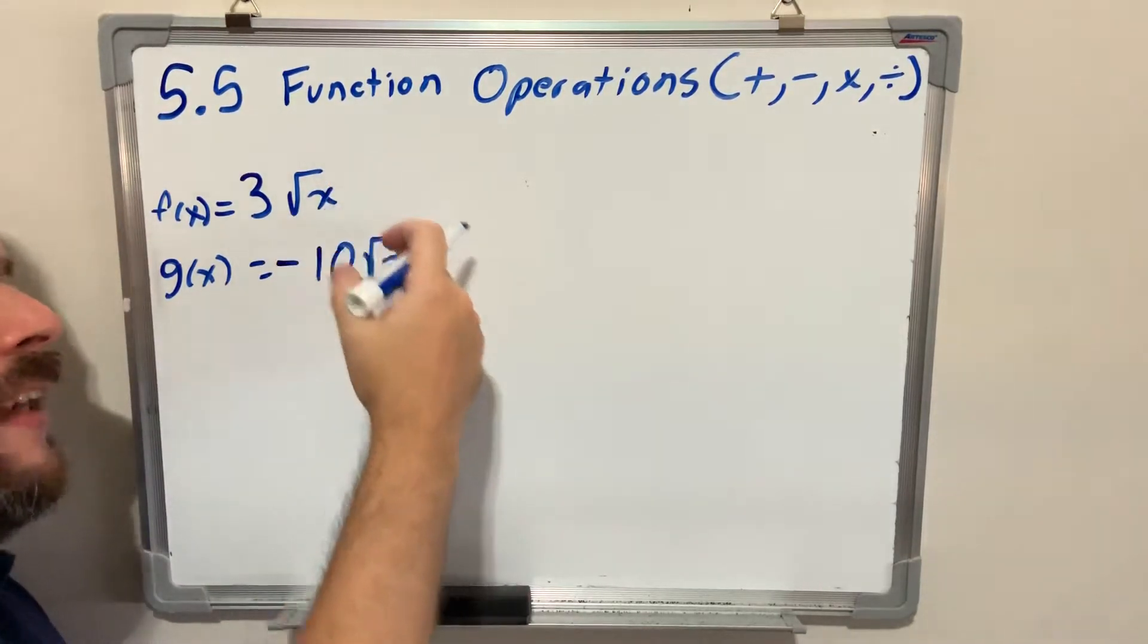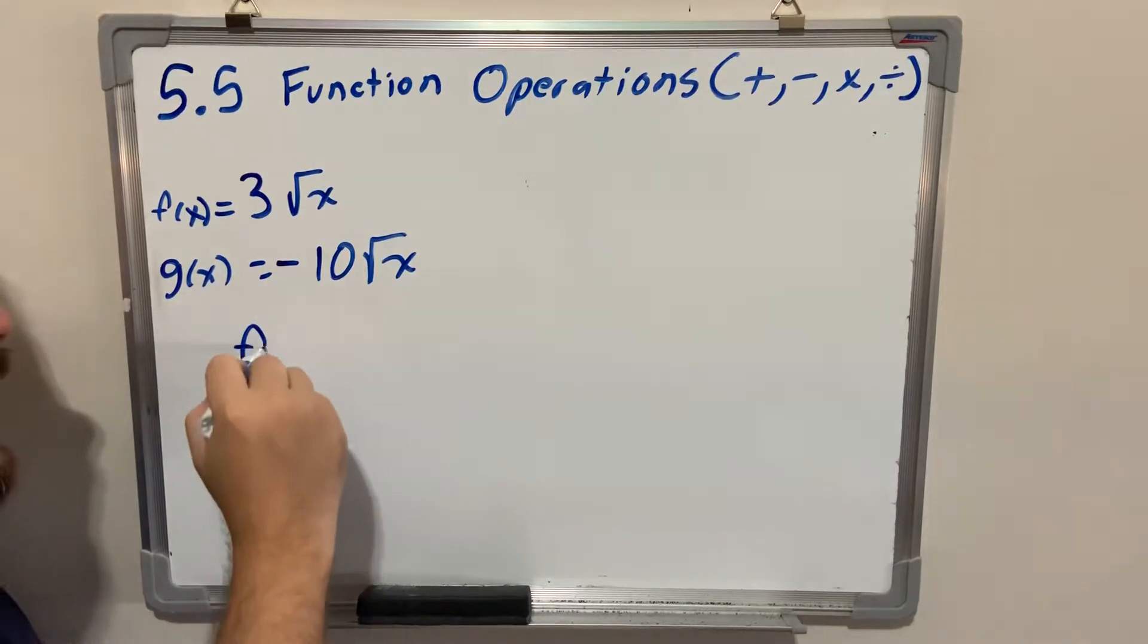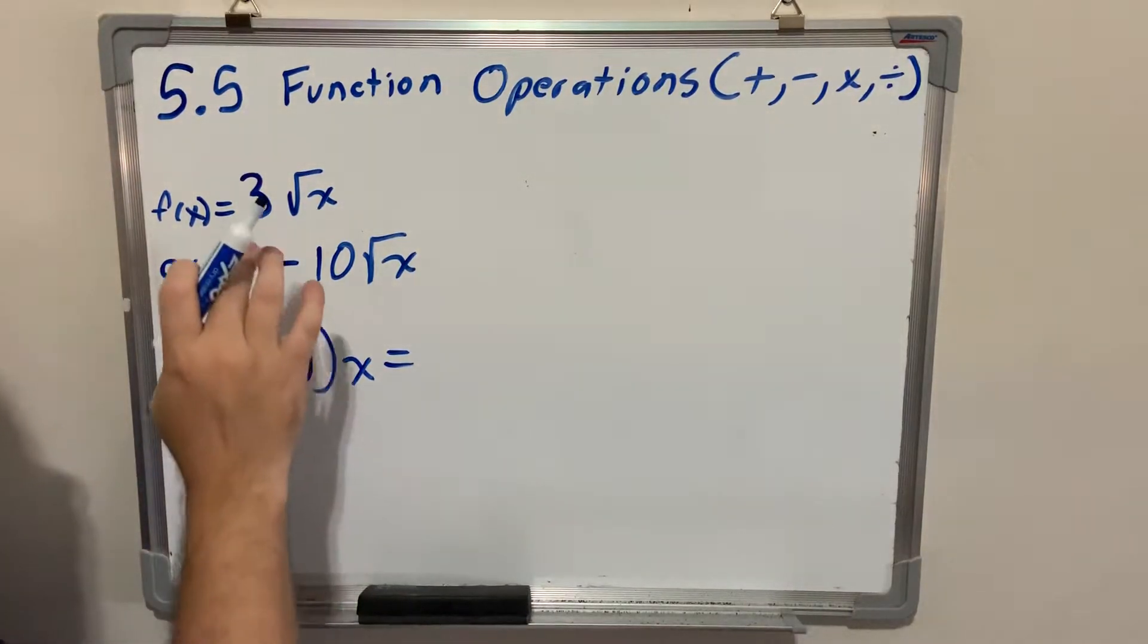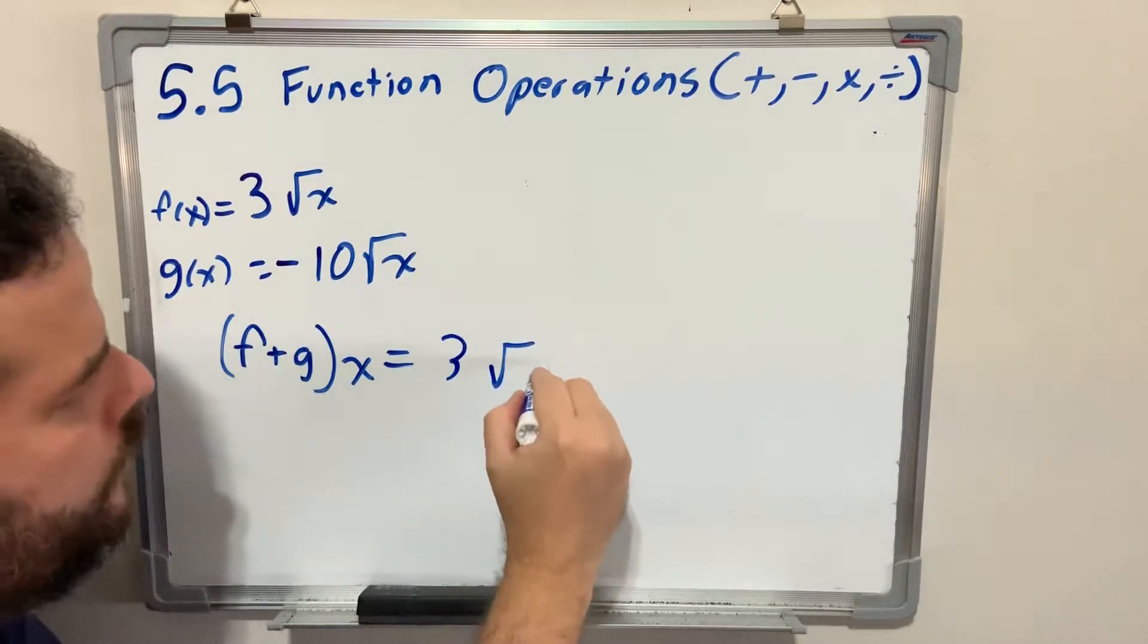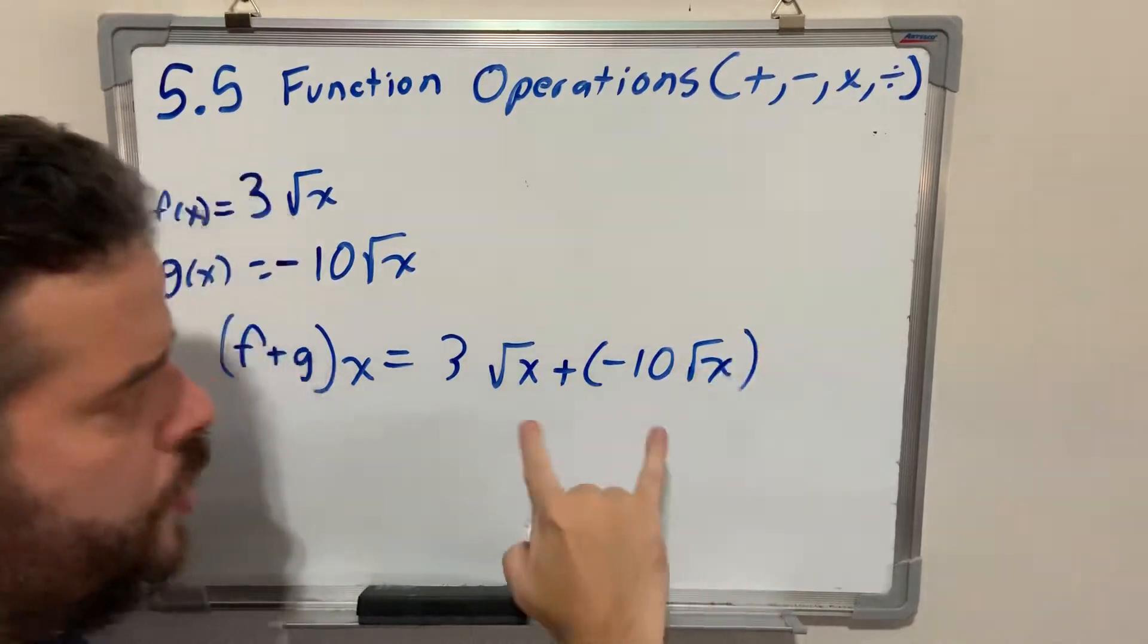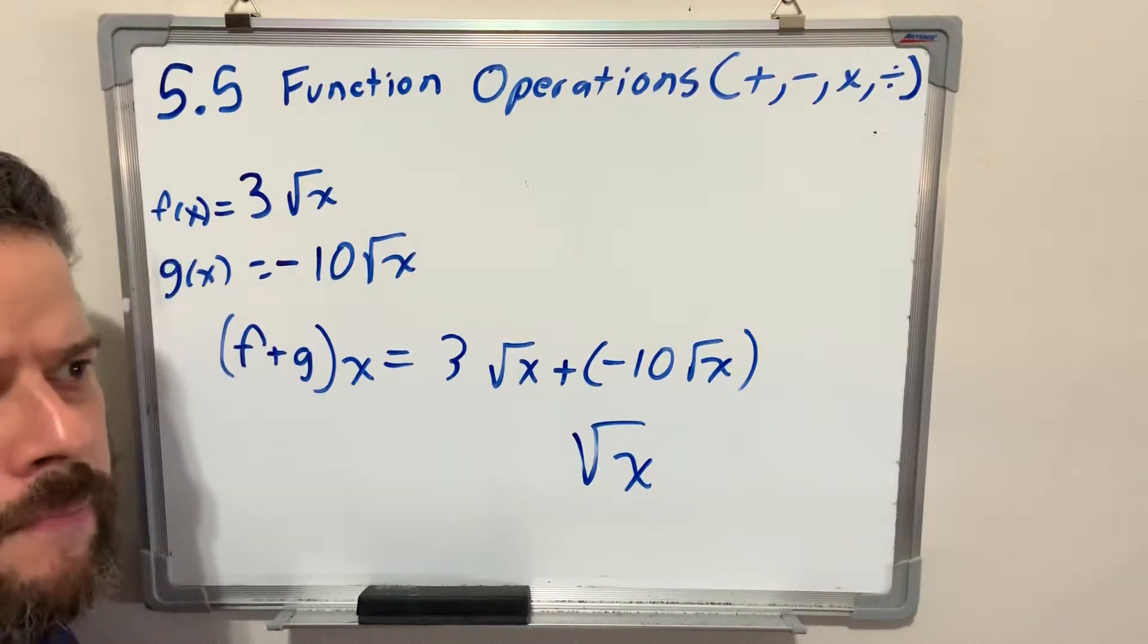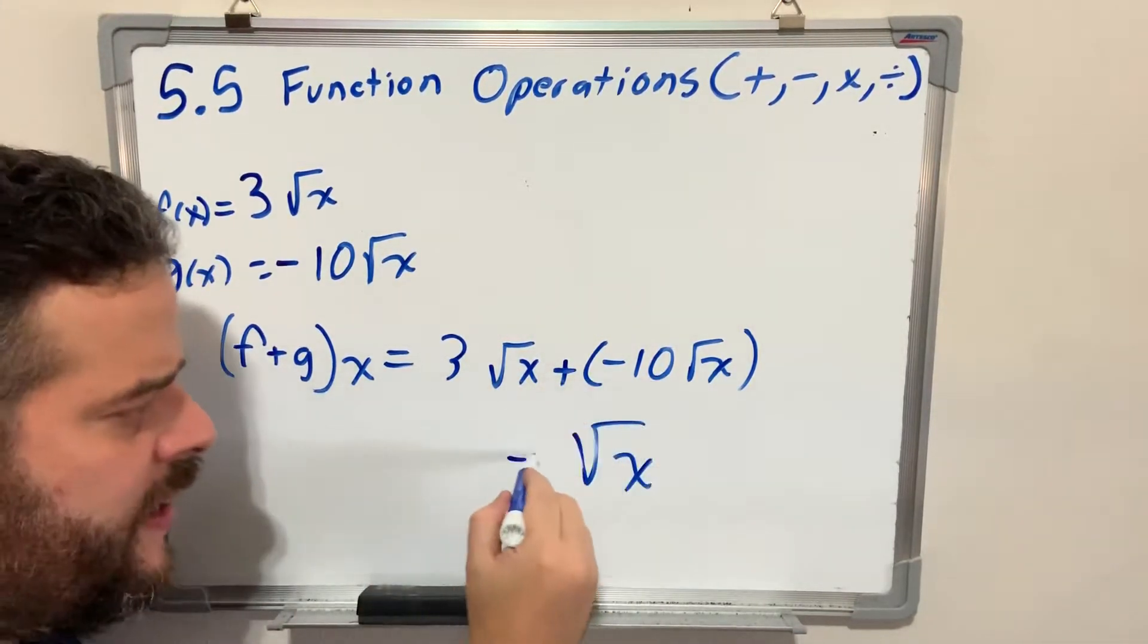If I can add like terms, how is this expressed? f plus g of x. When I add these two, you write them down, join like terms, the radicals do not change when you add, and do the normal operations with the coefficients. 3 plus negative 10, negative 7.